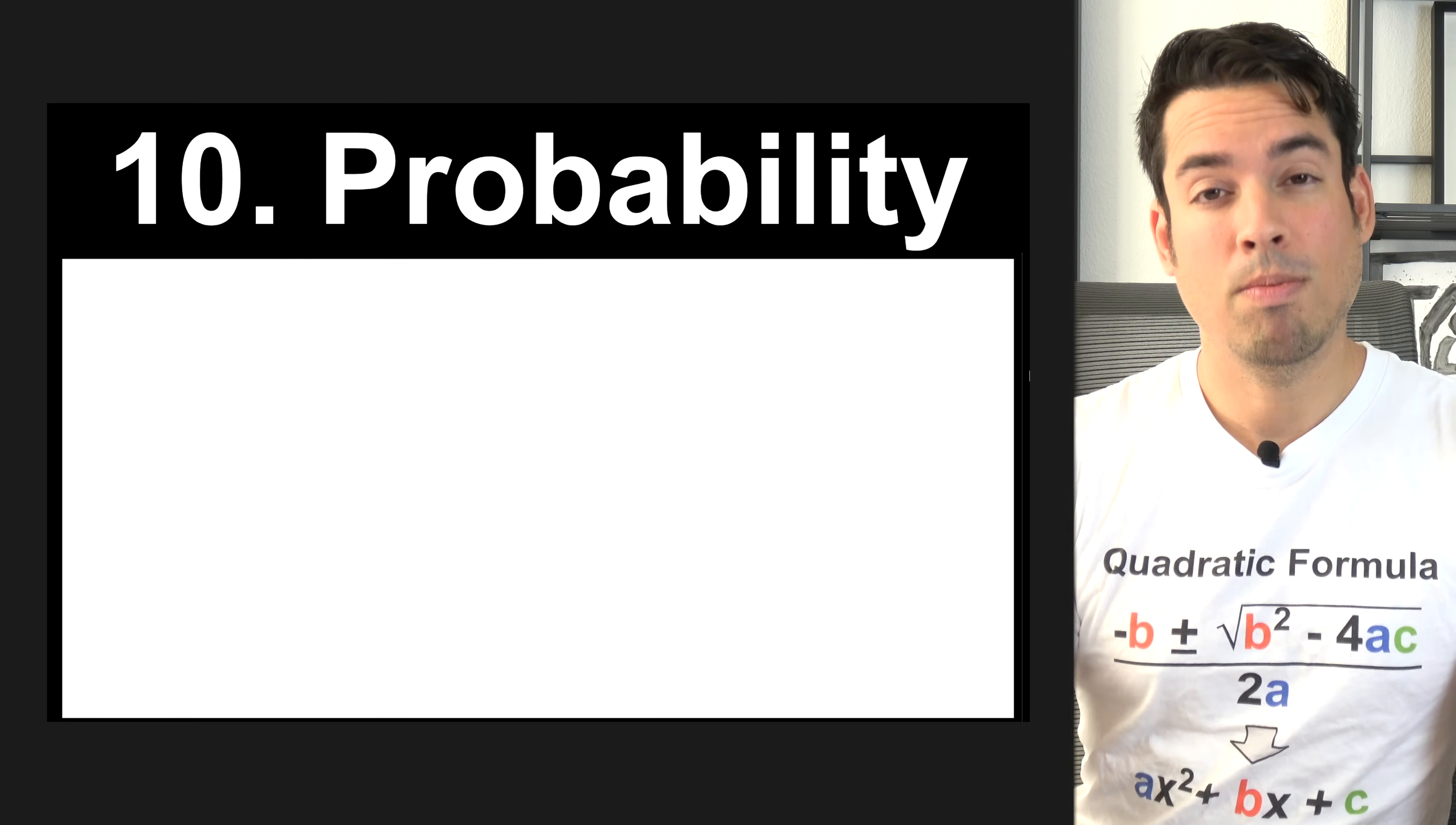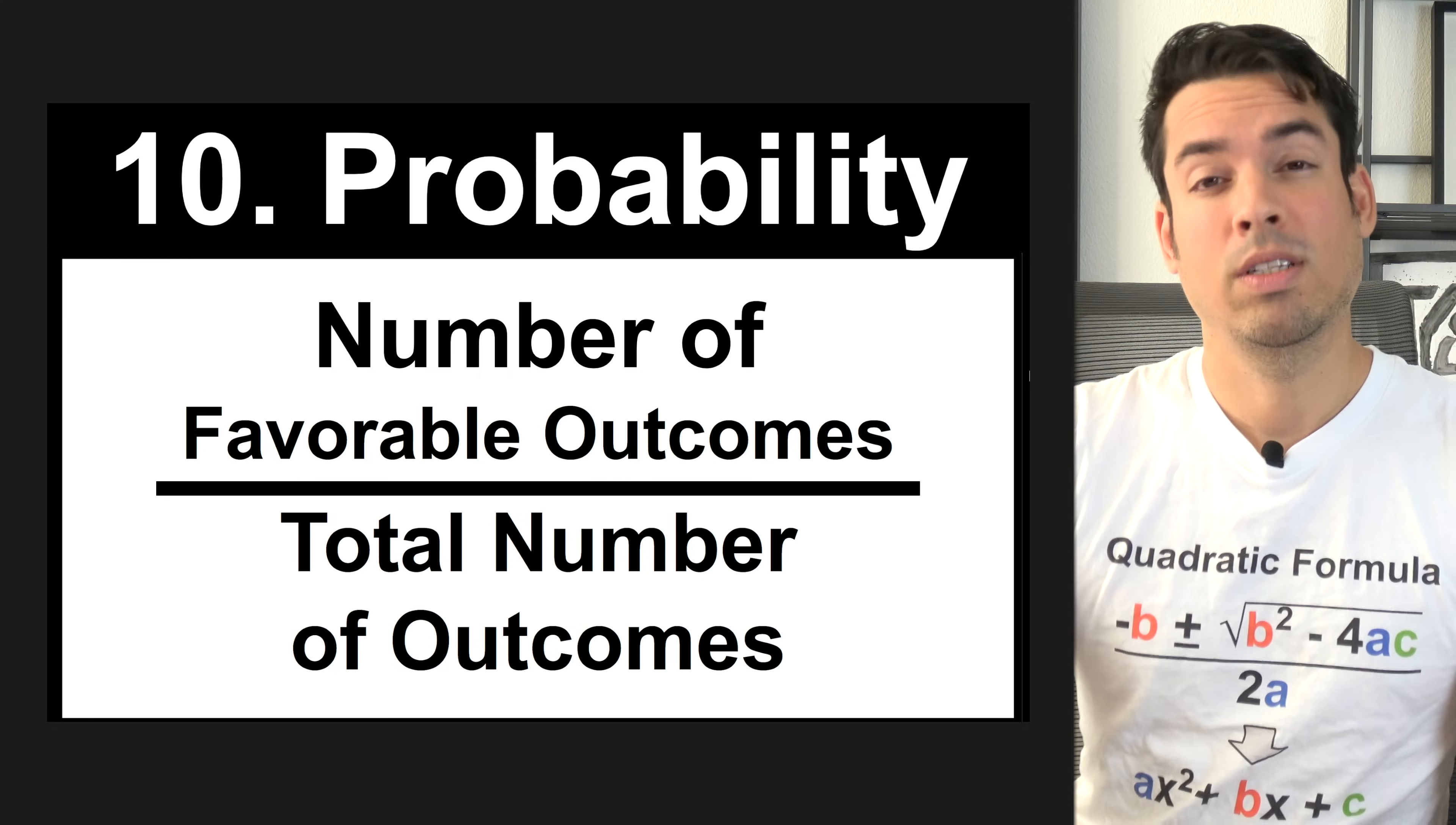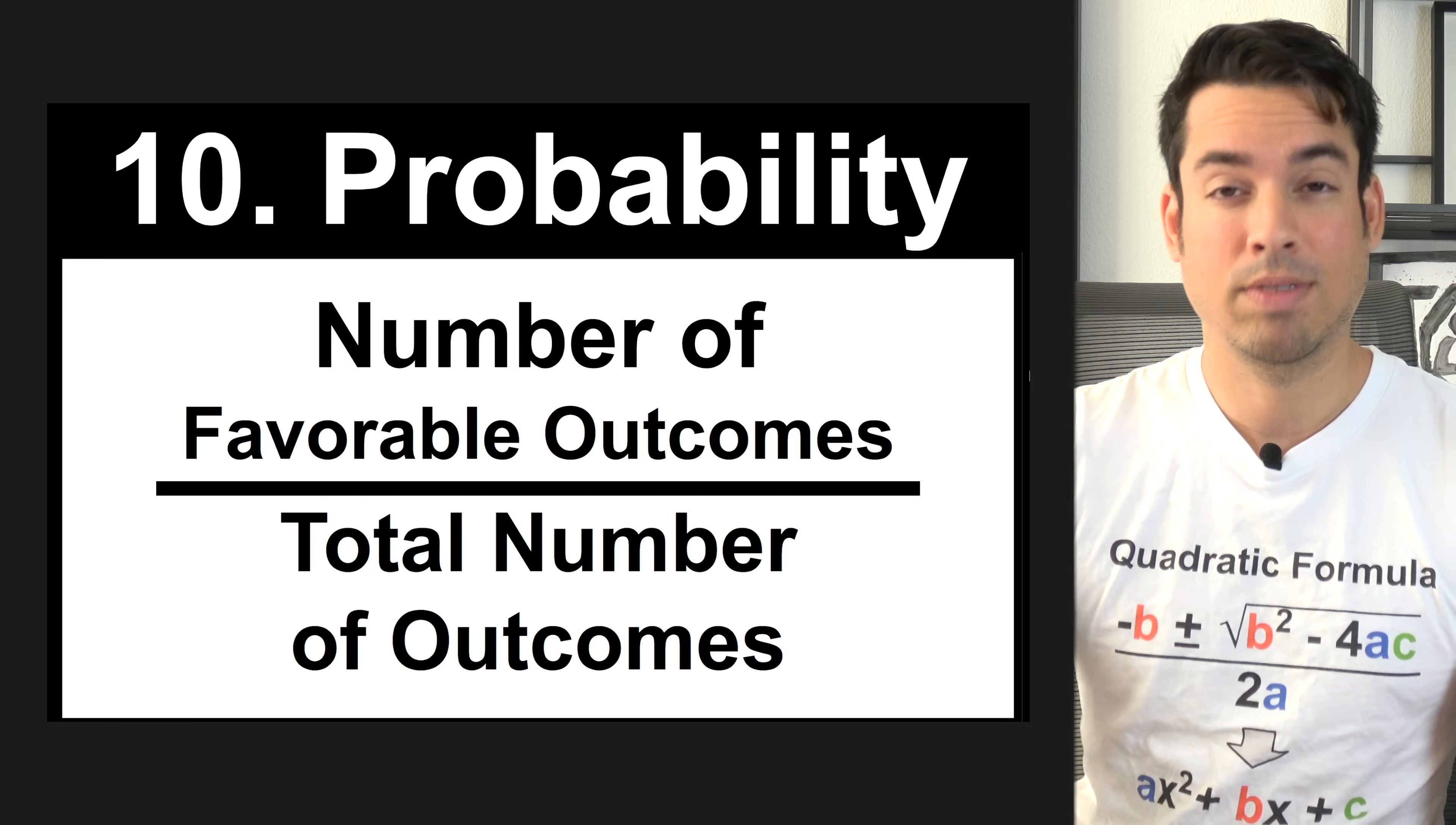Next, we have the formula for probability, and probability is pretty straightforward. It's simply the number of favorable outcomes over the total number of outcomes. For example, if you have a bag of 10 marbles, three of them are red, the probability that you're going to select the red marbles is three out of 10.